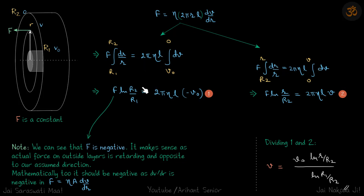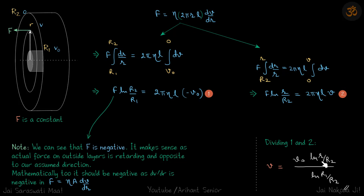Solving, we want v as a function of r, but we don't know F and we want to eliminate L. So we simply divide the two integrated equations. Once we do that, we get our answer: v comes out as a function of r. Notably, it is independent of η — so no matter what liquid fills the gap, the velocity variation is the same.